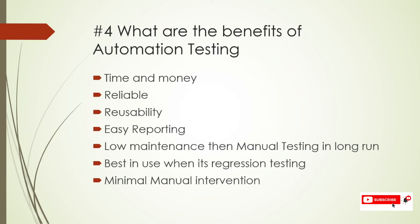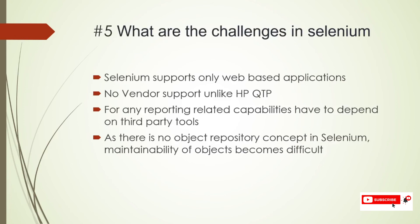Automation is best used for regression testing because executing thousands of test cases manually is really hard, but automation resolves that and is very useful for regression test cases. It also reduces manual intervention — no manual intervention is needed in automation testing.